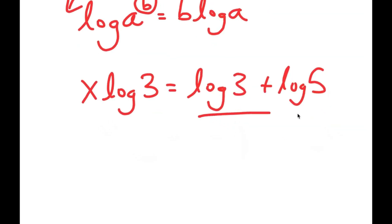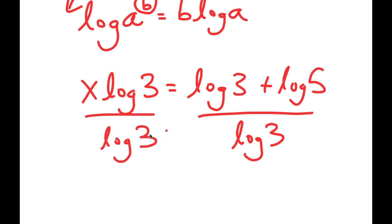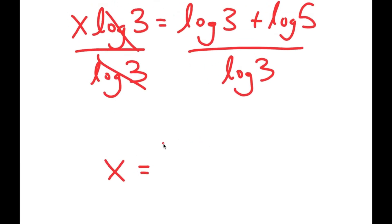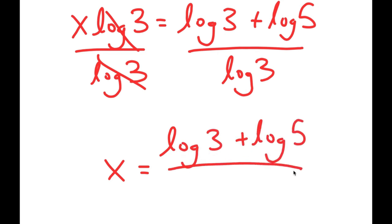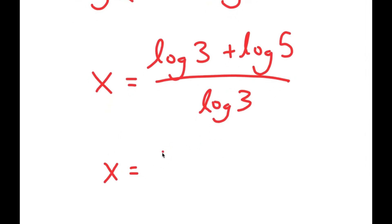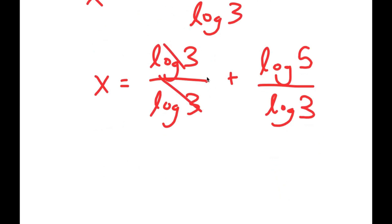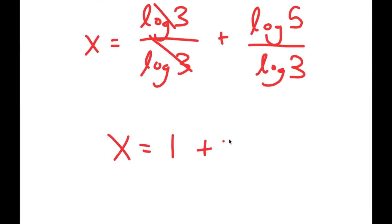Now dividing both sides by log 3, these two cancel out, and I get x is equal to log 3 plus log 5 over log 3. This is the same thing as log 3 over log 3 plus log 5 over log 3. Log 3 and log 3 cancel out, so I get x is equal to 1 plus log 5 over log 3.